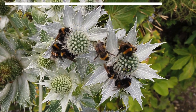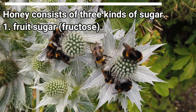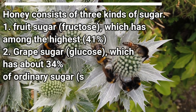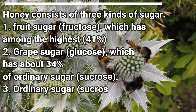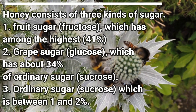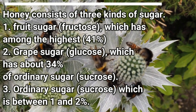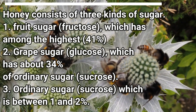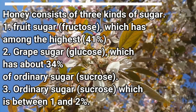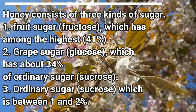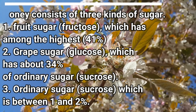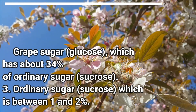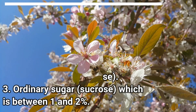Honey consists of 3 kinds of sugar: 1. Fruit sugar, fructose, which has the highest amount at 41%. 2. Grape sugar, glucose, which is about 34%. 3. Ordinary sugar, sucrose, which is between 1 and 2%.